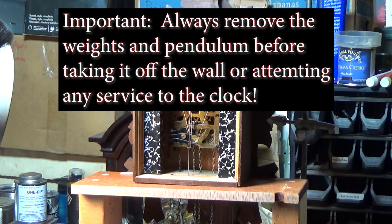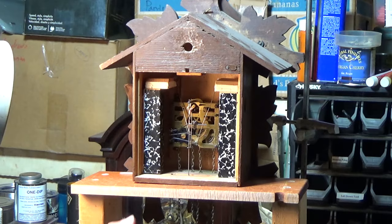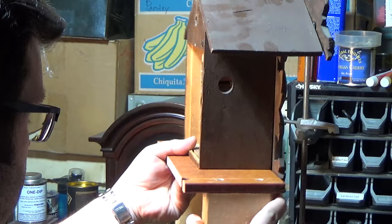Also, be sure to remove the weights and the pendulum before taking the clock off the wall and attempting any service. The first step is to assess the mechanics of this particular cuckoo clock, which we have already covered. This clock is about as simple as you can get, as there are no other functions like music boxes or visible moving parts aside from the typical bird and door movement.